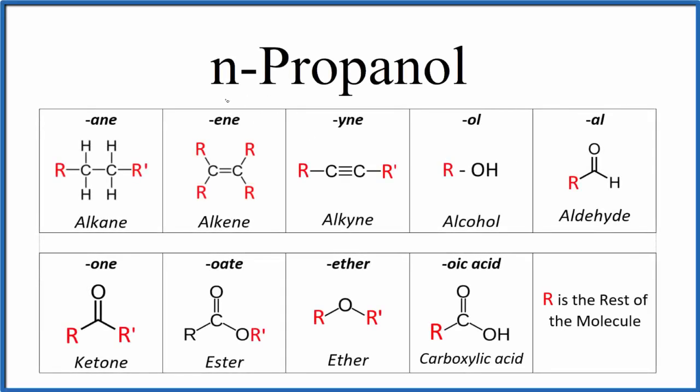In this video, we'll write the chemical formula for n-propanol. We'll also take a look at the structural formula for n-propanol as well. So we look at the name here, we see it ends in OL, and we have this table here of common functional groups in organic chemistry. When something ends in OL, that means we have an alcohol.